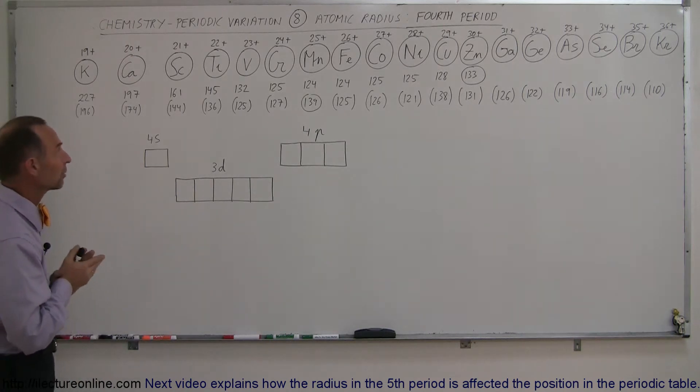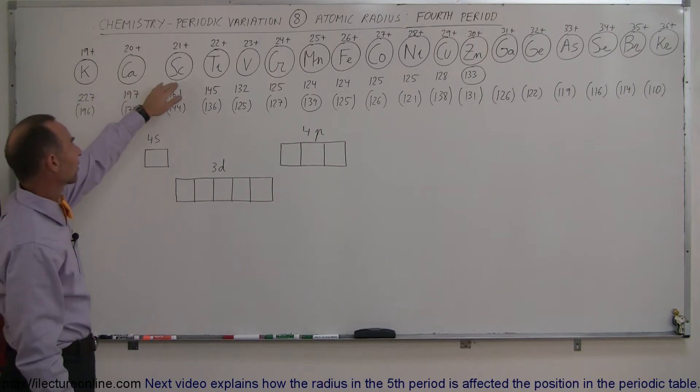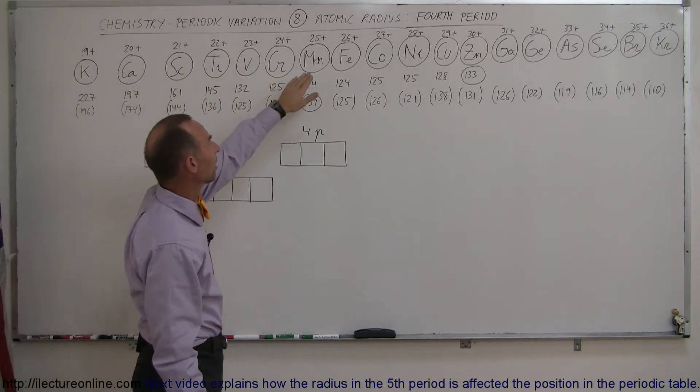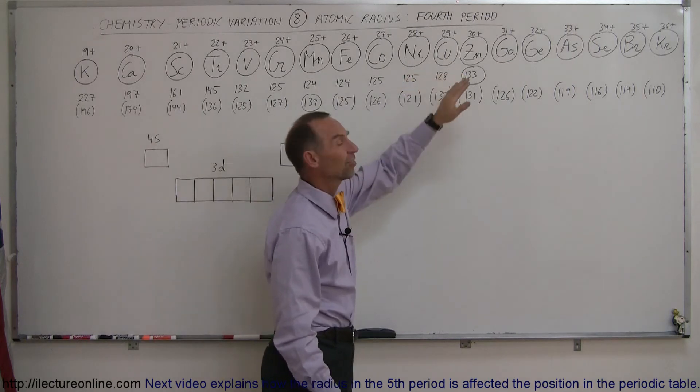So let's take a look at the fourth period now, starting on the left with potassium and calcium, then we have scandium, titanium, vanadium, chromium, manganese, iron, cobalt, nickel, copper, and zinc - those are the metals.